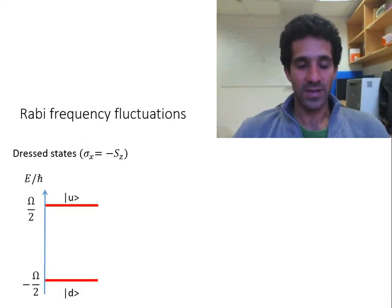The magnetic noise is not the only noise in our problem. The second important noise comes from the Rabi frequency fluctuations of the dressing field.